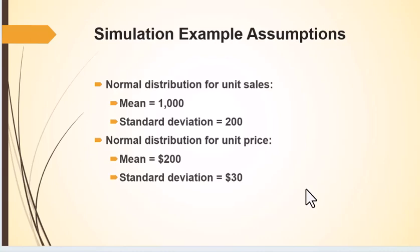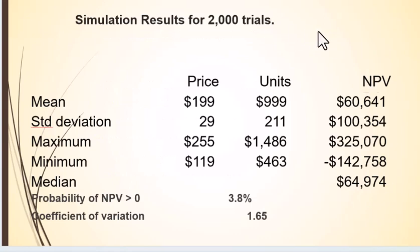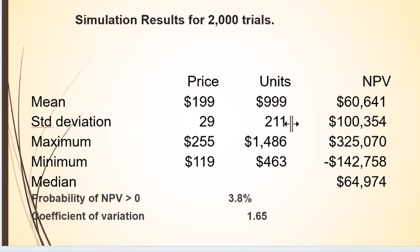The computer selects these two variables — these are the only two we're changing, though we could do this for every variable. It does this 2,000 times. The results showed an average price of $199 with a standard deviation of $29, and average units of $999 with a standard deviation of 211. Based on that, we can calculate net present value and determine the standard deviation.